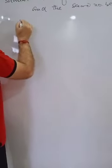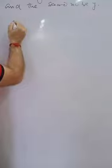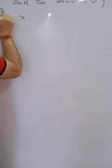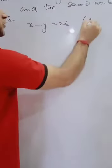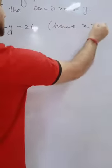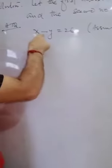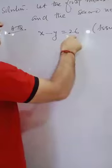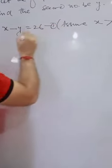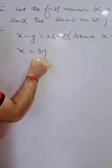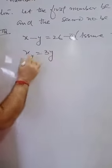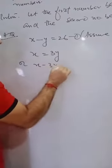The second step is to translate the problem into linear equations. According to the question, the difference of two numbers is 26, so assuming X is greater than Y, we write: X minus Y equals 26. That is equation one. And one number is three times the other, so we write: X minus 3Y equals zero. These are our two equations.